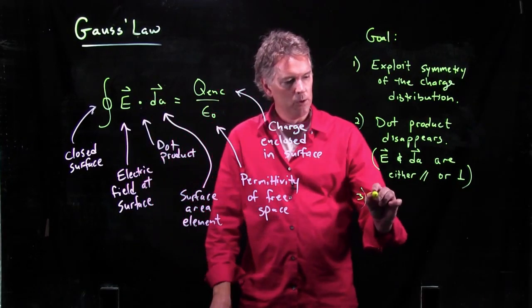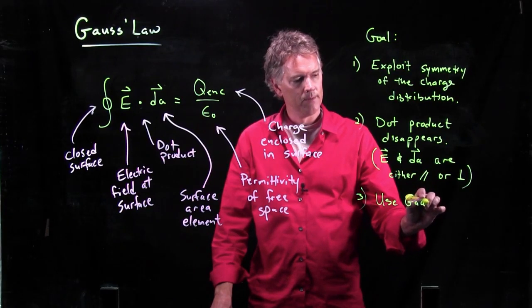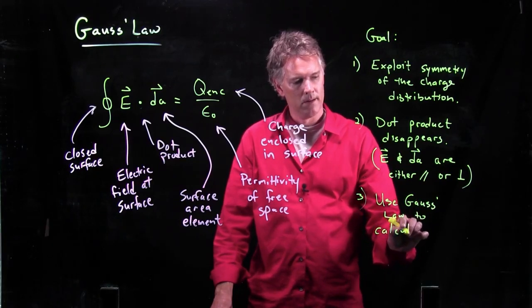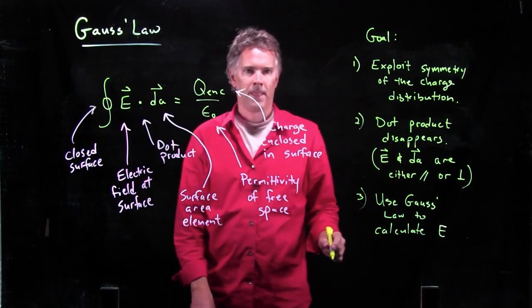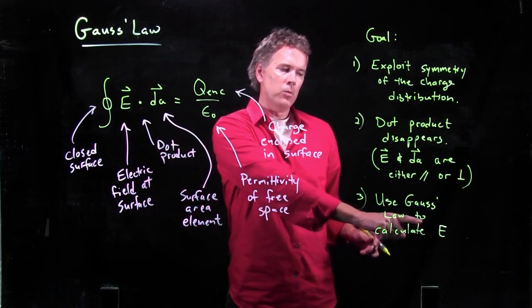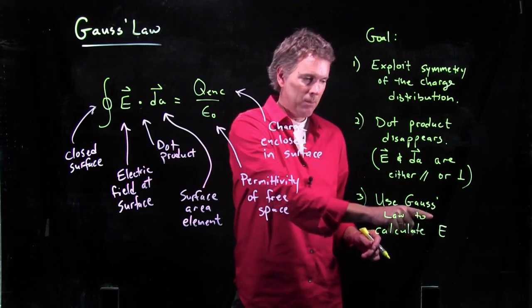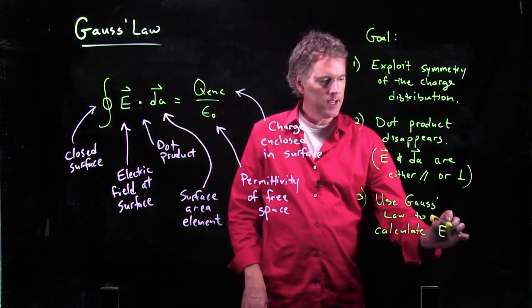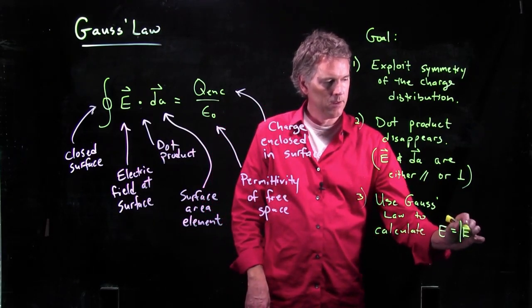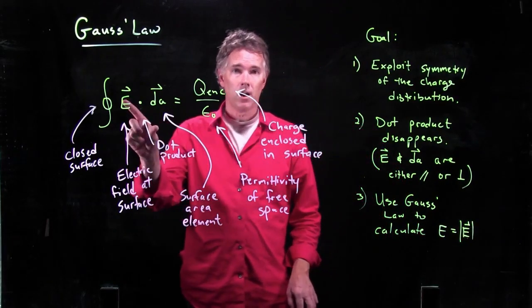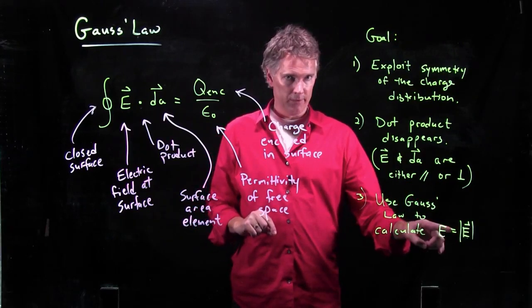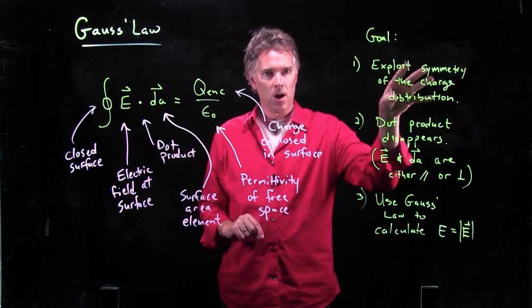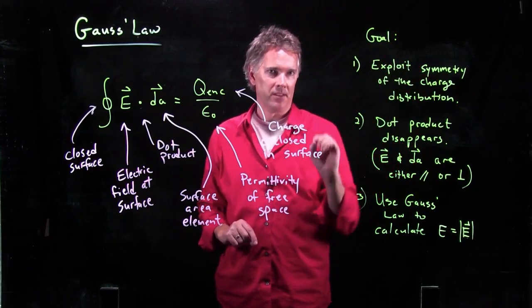And then, we use Gauss's law to calculate E. Now, I want you to look at what I wrote there. I said we use Gauss's law to calculate E, but I didn't put a vector sign on top of it. What we are calculating here is the magnitude of the E field. Gauss's law tells us the magnitude of the E field, but it doesn't tell us the direction of the E field. The direction of the E field has to come from the symmetry of the problem, back here in step one.